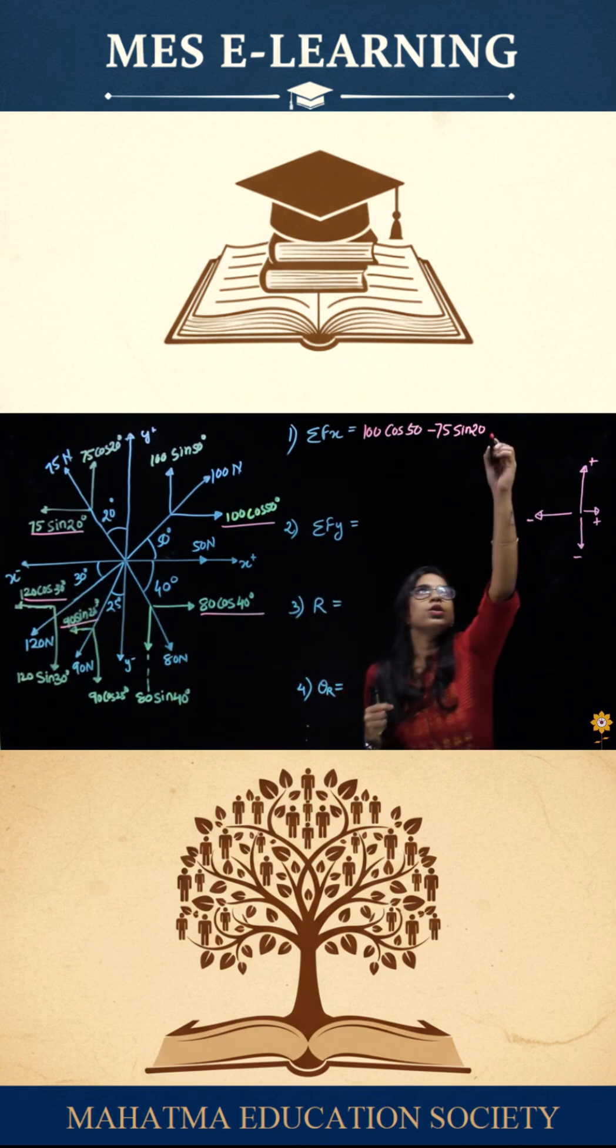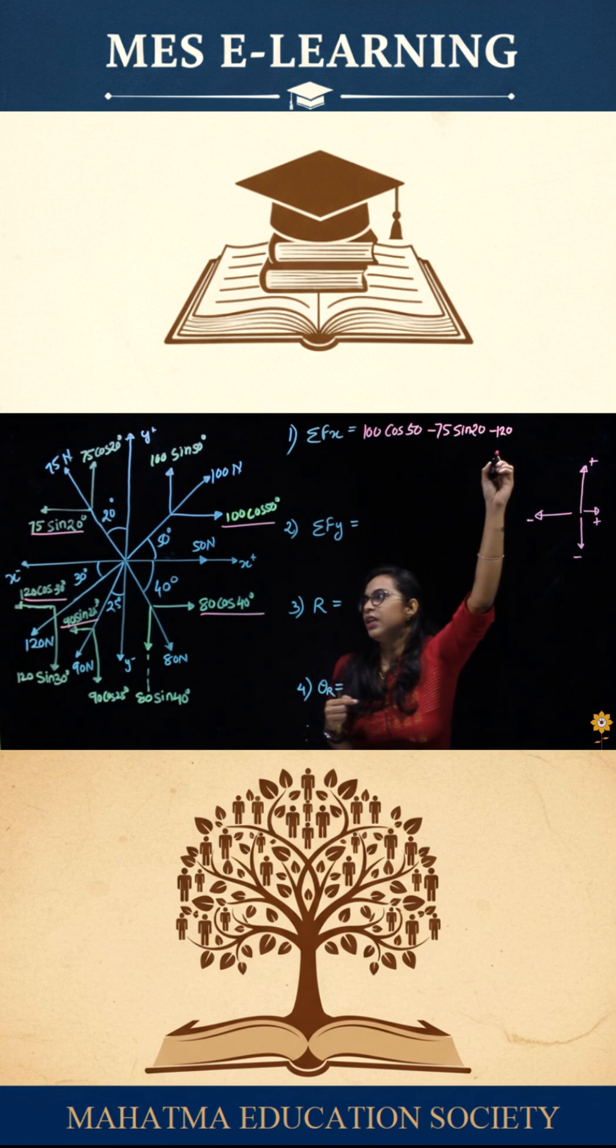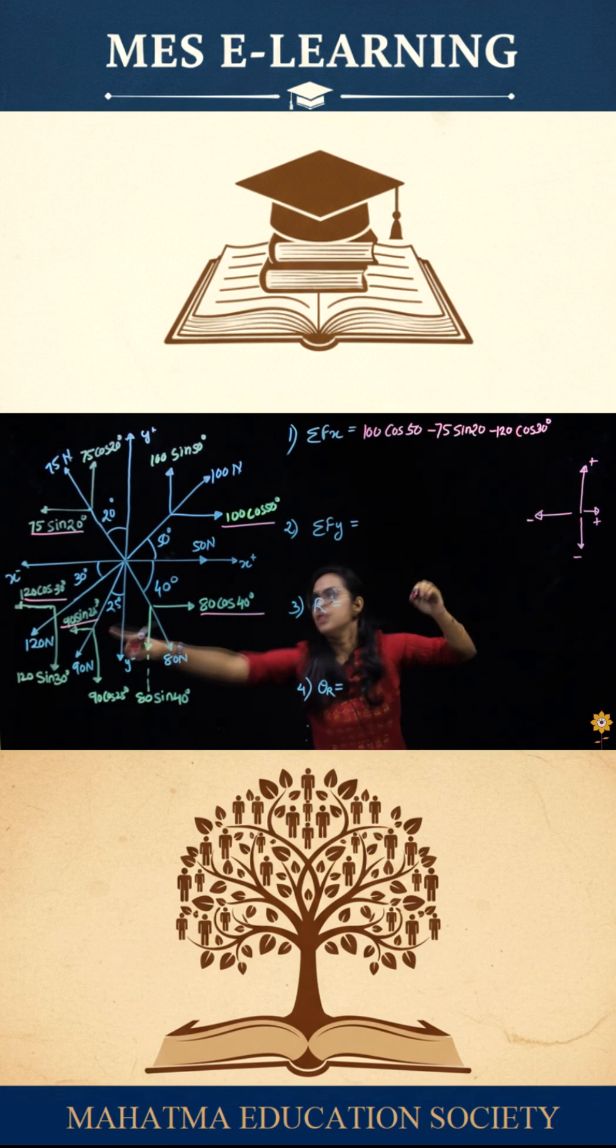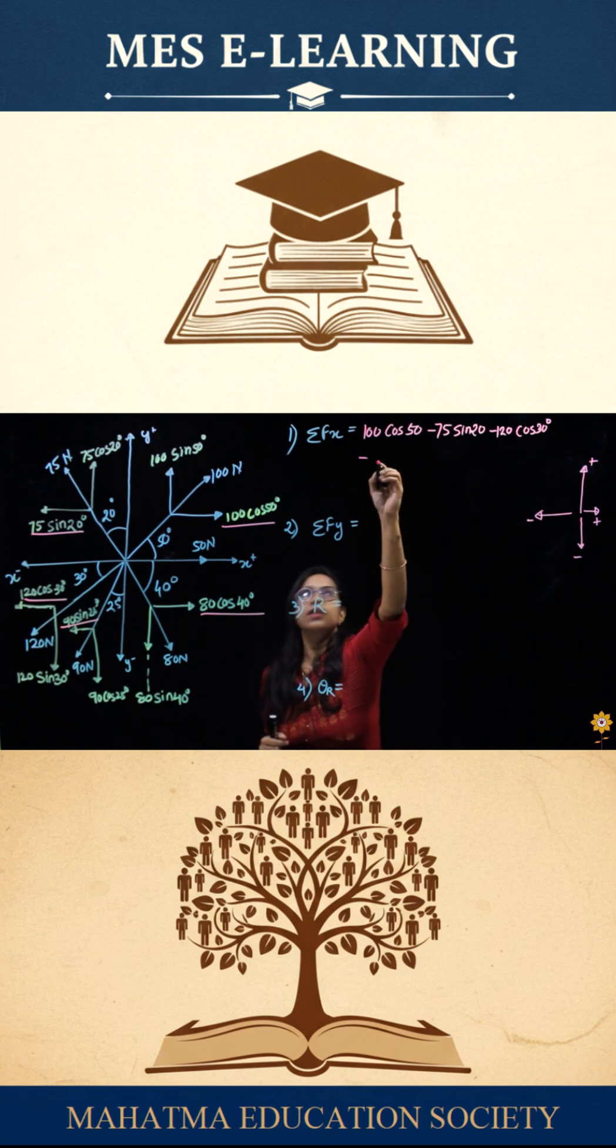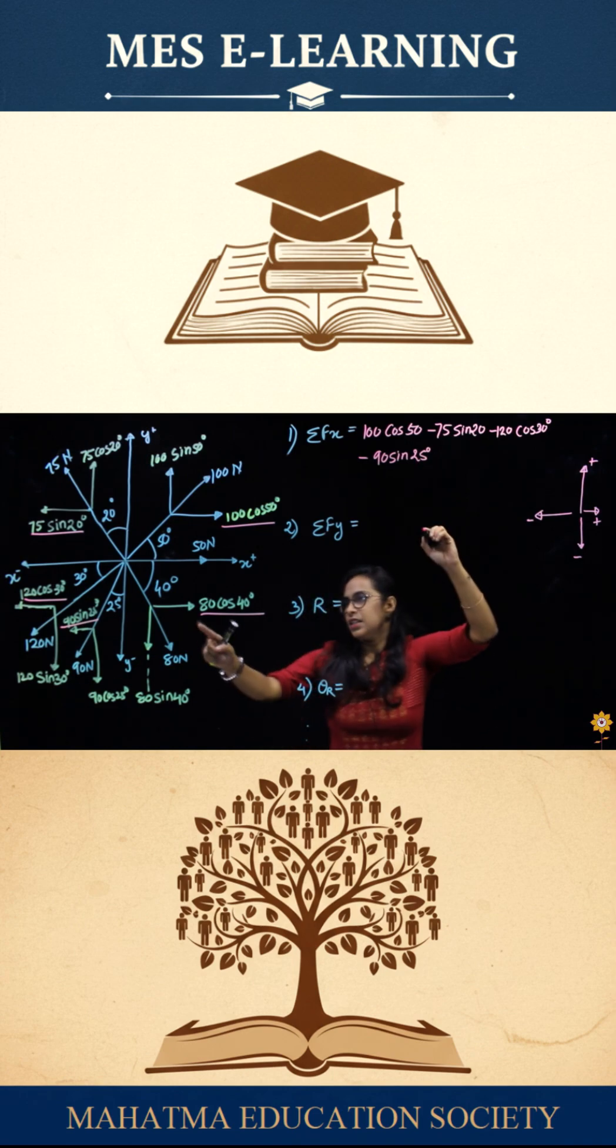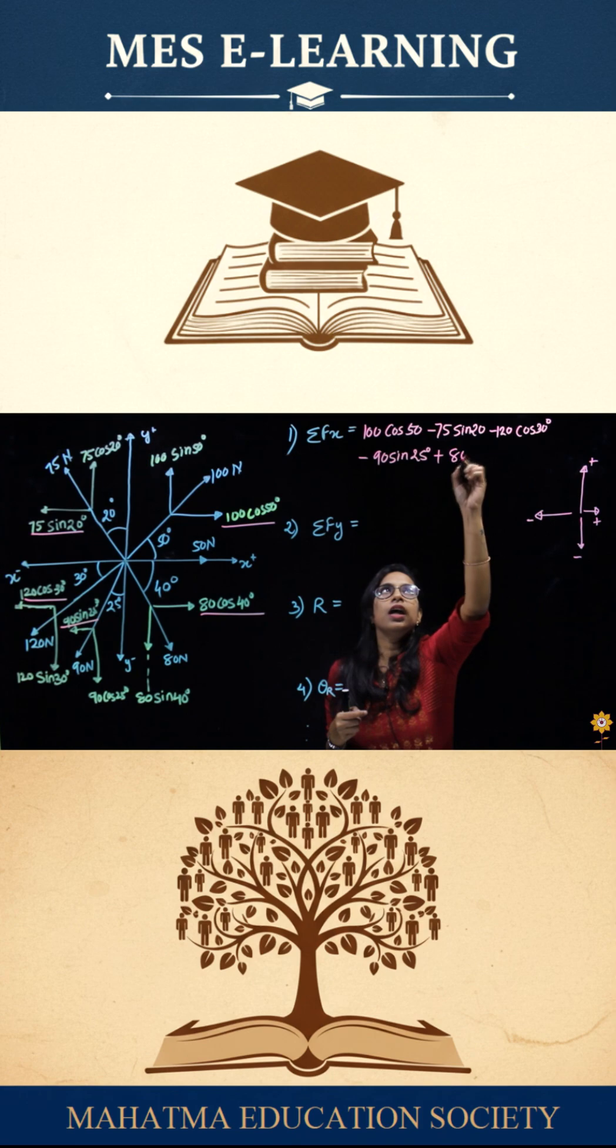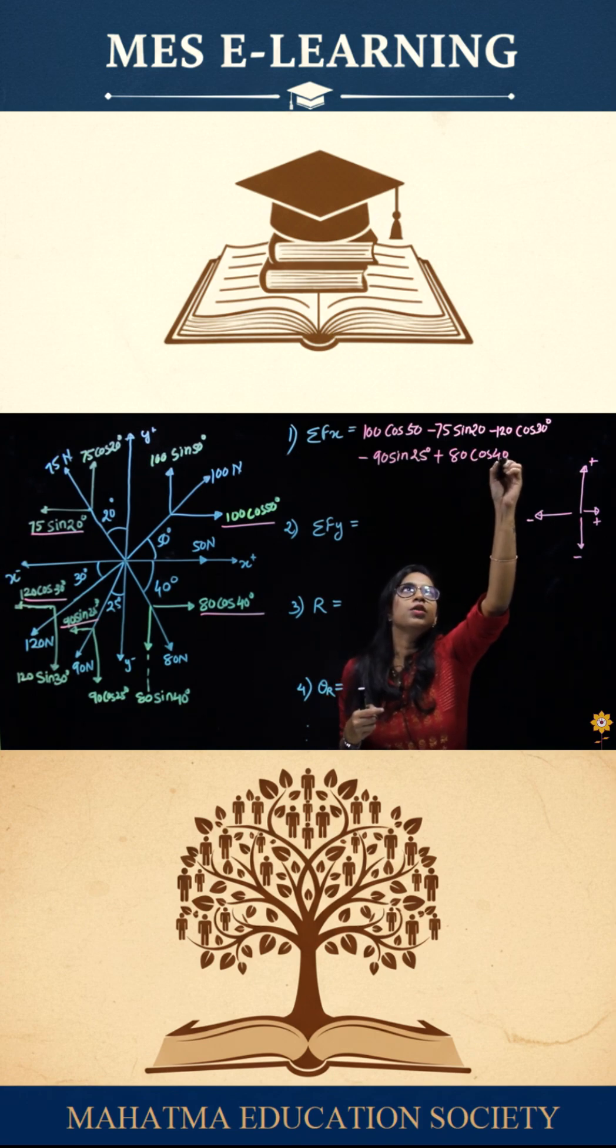Next is this force, that is minus 90 sine 25. Next is this force which is coming in the forward direction, so this is plus 80 cos 40.